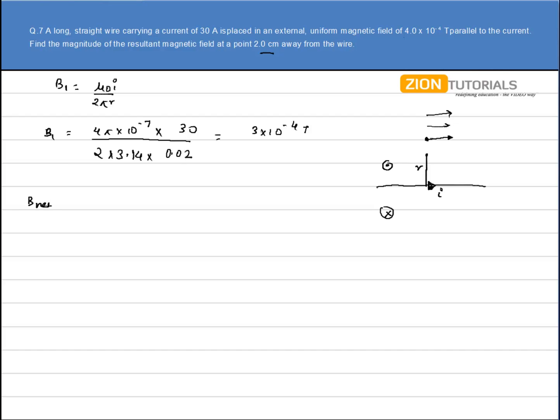Let's say there are 2 vectors so the net vector is calculated by the formula B₁² + B₂² + 2B₁B₂cosθ. Clearly the angle between B₁ and B₂ is 90 degree. Cosθ will be 0.